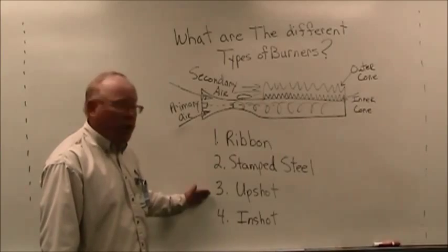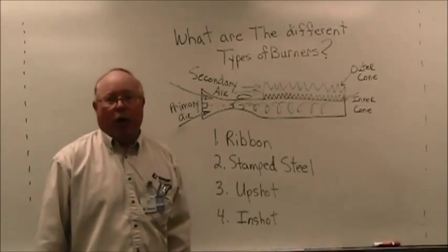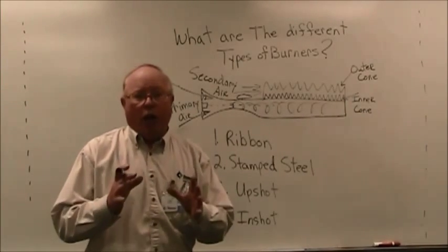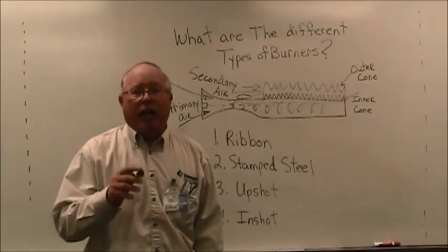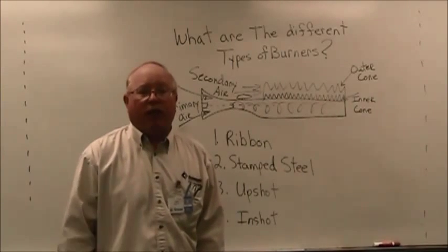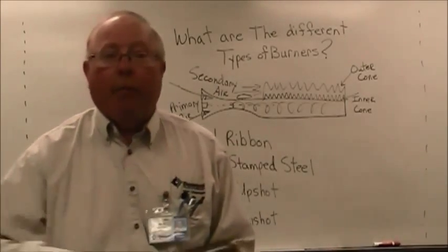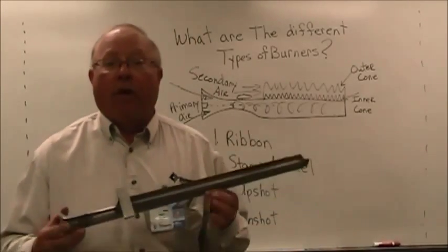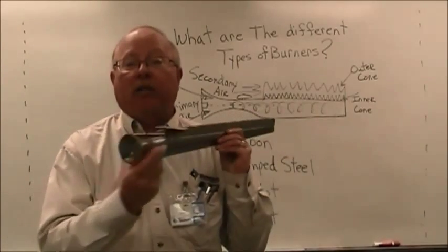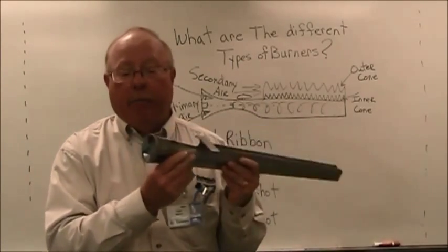We have the ribbon burner, the stamped steel burner, the upshot burner, and the in-shot burner. Each of these burners are going to be used with a different heat exchanger configuration or different efficiency. Of these burners, the ribbon burner is probably the oldest of the four that are mentioned up here.